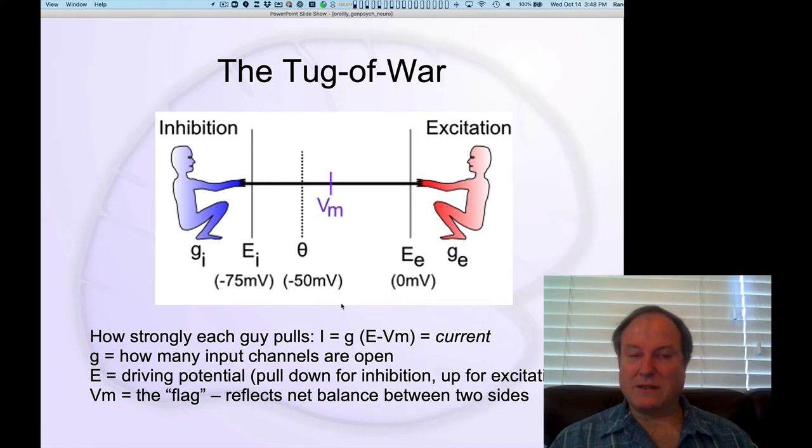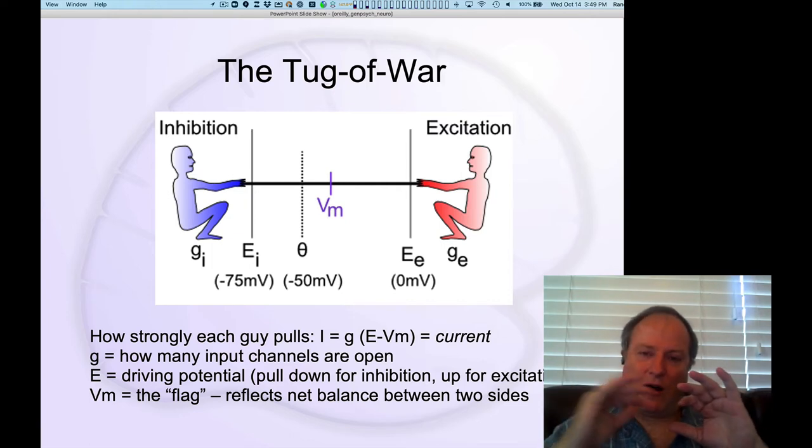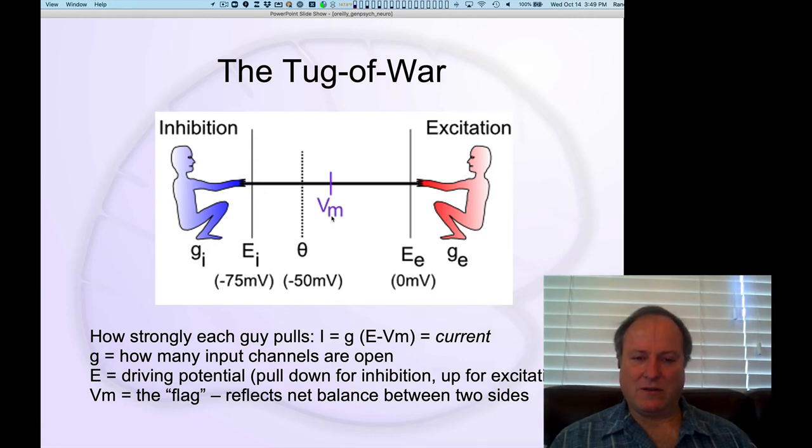And so you can write out some mathematics. This is all, again, totally beyond the scope of what you need to know. I'm just telling you so you can get the full picture of how it works if you're interested. This is Ohm's law for current I is equal to the conductance, which is also known as one over the resistance. In case you knew about resistance, conductance is much more sensible kind of number to be talking about. And the conductance is how big the excitation is. So you have a conductance for excitation, a conductance for inhibition, and that's equal to the number of channels that are open that allow excitation to flow into the cell or inhibition to flow into the cell.